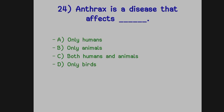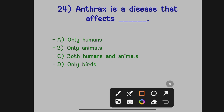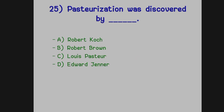Anthrax is a disease that affects dash. Option A: Only humans. Option B: Only animals. Option C: Both humans and animals. Option D: Only birds. The correct answer is Option C, both humans and animals.